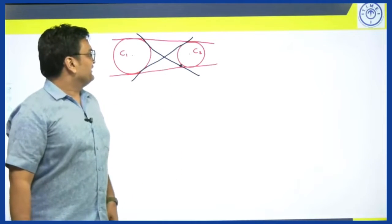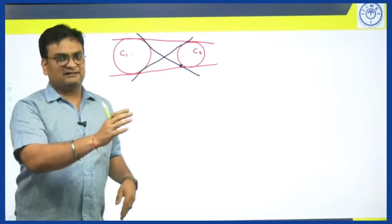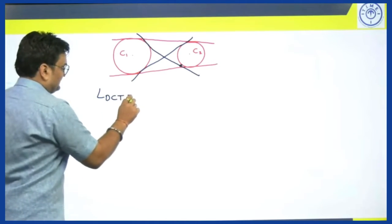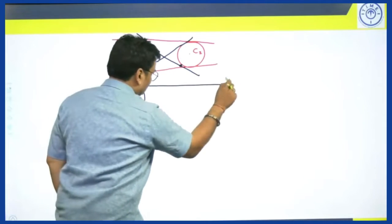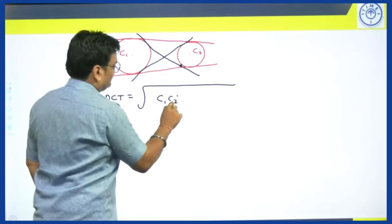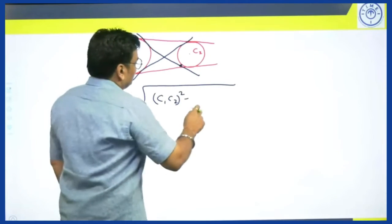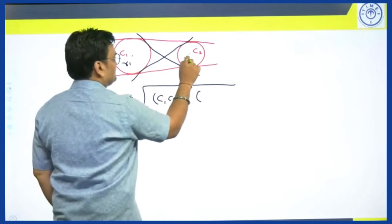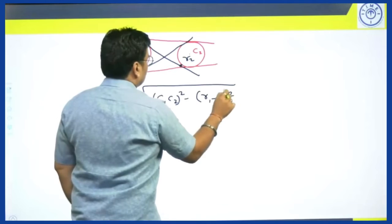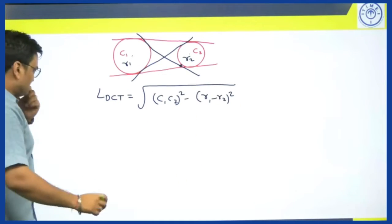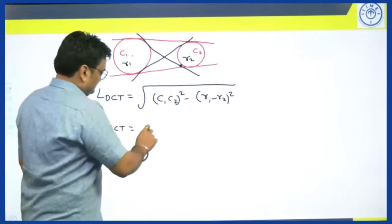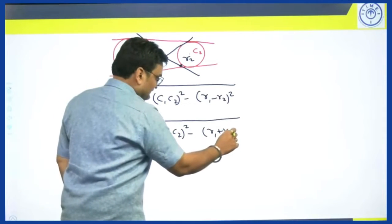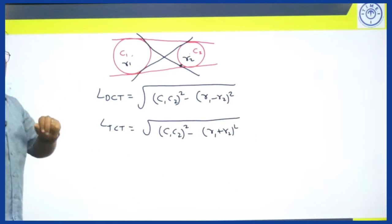There is a formula through which we can find the length of the direct common tangent and transverse common tangent. The length of the direct common tangent is given as: root over (distance between the centres)² minus (difference of the radii)², where R1 and R2 are the radii. Similarly, the transverse common tangent length is: root over (distance between the centres)² minus (sum of the radii)². These are the two formulae that you can note down.